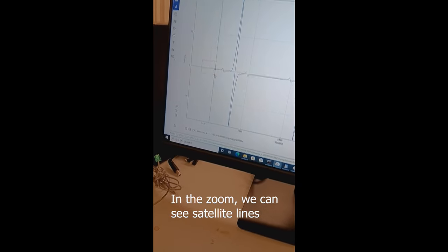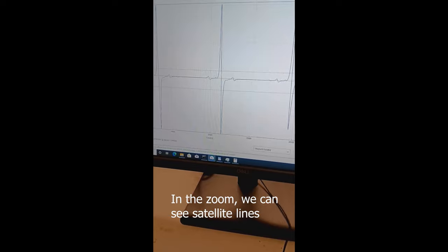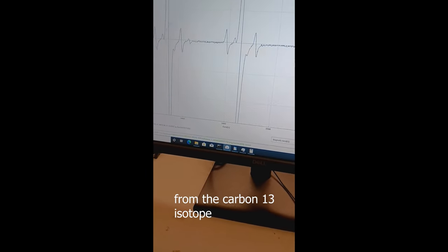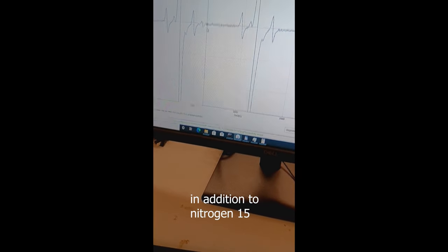In the zoom, we can see satellite lines from the carbon-13 isotope in addition to nitrogen-15. Here is the spectrum from nitrogen-14.